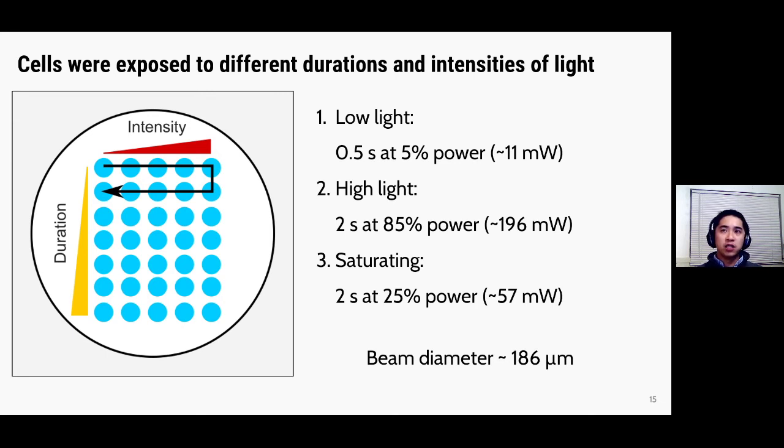Now with the microscope, we can image multiple different locations on the agar pad in the same experiment. So what I did was to basically program the microscope to look at 35 different locations on the agar pad. And basically for each of these spots, the cells were exposed to a different amount and intensity of irradiating light. So I basically organized this in a grid pattern, with increasing intensity along the horizontal axis, and increasing light duration along the vertical axis.